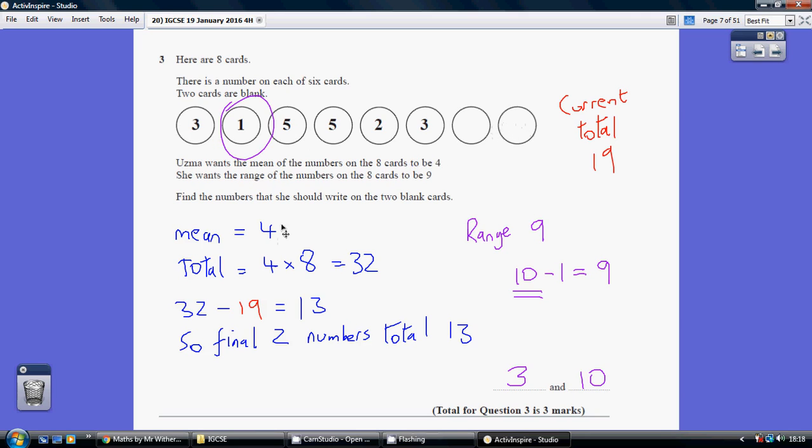So when we add them all up to get a mean of 4, they're going to have to equal 4 times 8, which is 32. Because 32 divided by the number of numbers, 8, would give us a mean of 4. So we know that the total of these numbers has got to be 32.